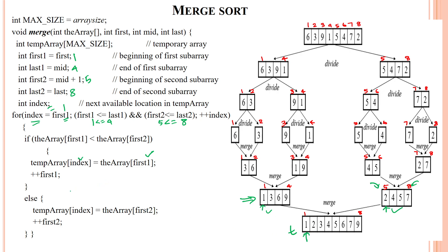The value at index 1 is 1, and the value at the second array's first index is 2. Since 1 less than 2 is true, we assign array of first index — value 1 — into the temporary array at index 1. Then we increment the first index to 2 and go back in the for loop. Condition: 2 less than or equal to 4 is true, and 5 less than or equal to 8 is true. Array of index 2 is 3.